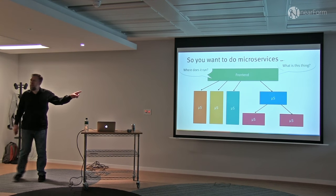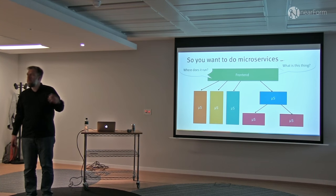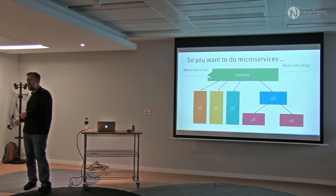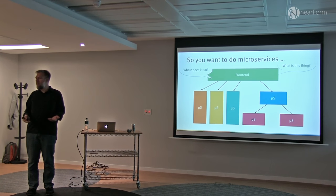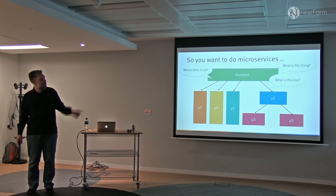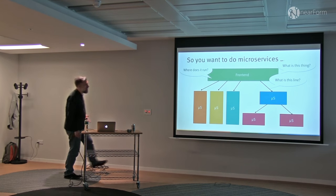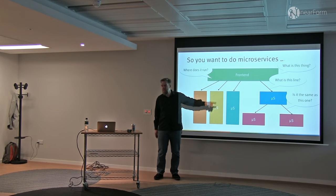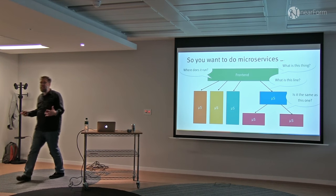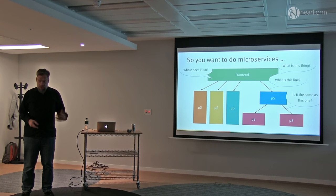Where does this front end run? Is it something that runs in the browser? Does it run on a mobile device? Is it a different kind of server application that calls my services? Is it a mixture of both? Does it matter? What are those lines in the architecture diagram? What does an arrow signify? Is the communication from the front end to the services the same kind as between services? I think these things are glossed over way too often, and we should think way more about this.